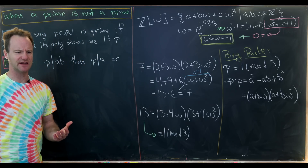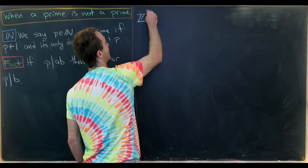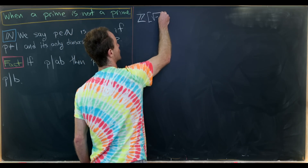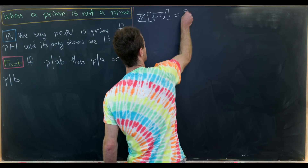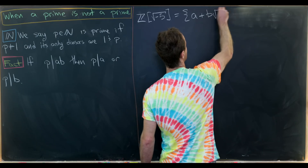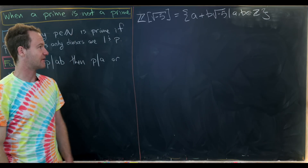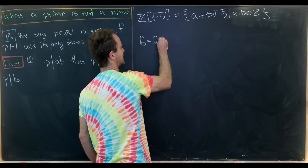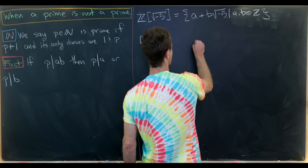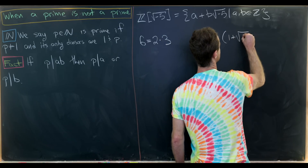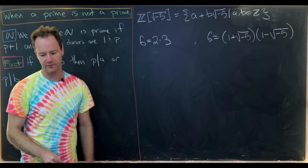Now let's look at an example where the idea of primeness starts to fall apart. We'll examine the extension Z adjoin the square root of minus 5. Consider the number 6: it factors as 2 times 3 over the integers, but it can also be factored as (1 + √−5)(1 − √−5), since that equals 1 plus 5, which is 6.